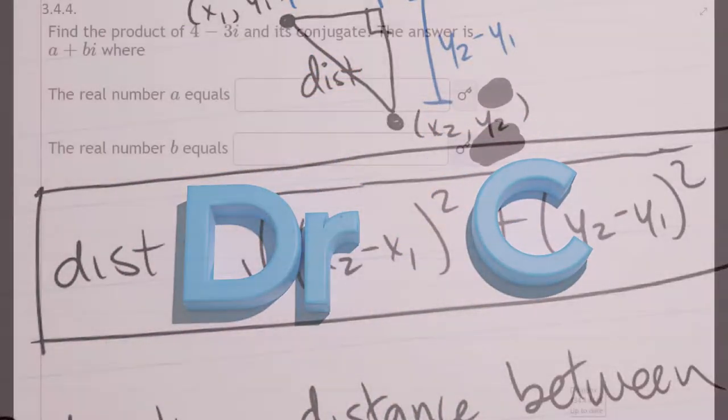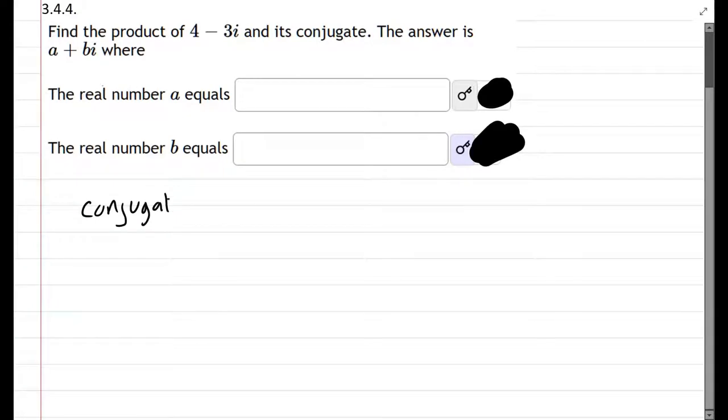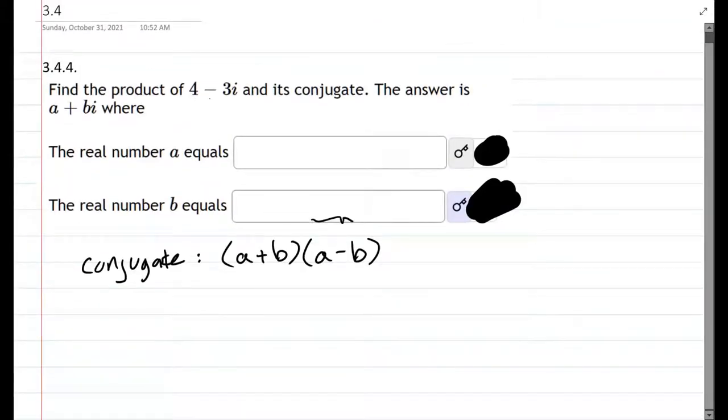Here we're going to find the product of 4 minus 3i and its conjugate. So first of all, what is the conjugate? If we just have two terms a plus b, the conjugate is a minus b. And if you started with a minus b, your conjugate would be a plus b.